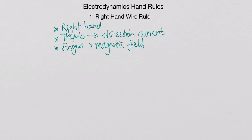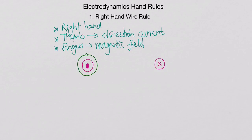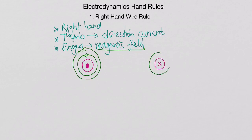Using those two symbols — a dot showing current coming towards us and a cross showing current moving away — if you grab the wire on the left with your right hand, your thumb would point towards you and your fingers would wrap around pointing in that direction, showing the magnetic field lines. For the wire on the right where current moves away, your thumb points into the screen and your fingers wrap the other way, telling you the direction of the magnetic field around any current-carrying conductor.